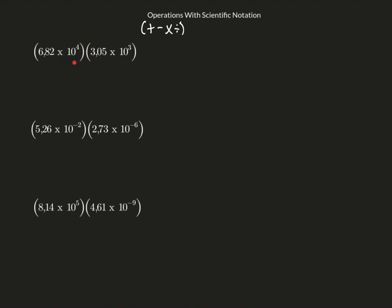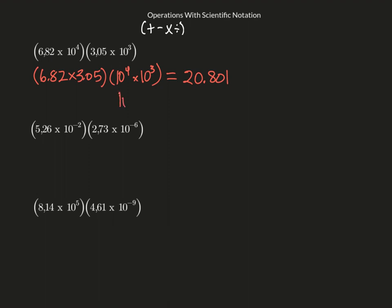Even though this is in parentheses — 6.82 times 10 to the fourth, and 3.05 times 10 to the third — it's really just four numbers being multiplied together. We can use the commutative property of multiplication to rearrange them, putting the decimals together and the powers together: 6.82 times 3.05, then 10 to the fourth times 10 to the third. Using a calculator for the first multiplication and adding the exponents, I get 20.801 times 10 to the seventh.